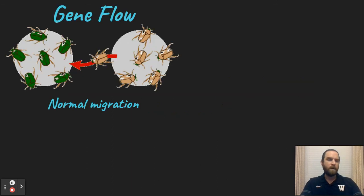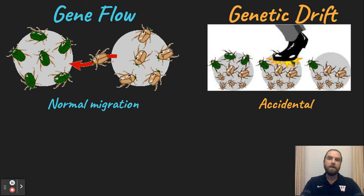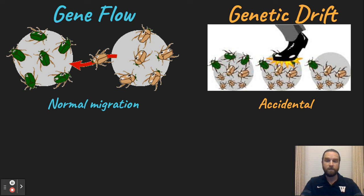A couple of ways. We have gene flow, which is when normal migration happens between populations of the same species — very normal. Another thing that can happen is genetic drift. These are accidental or catastrophic occurrences that destroy portions of a population, so those individuals cannot survive to reproduce, and you get selection for different traits totally by accident.